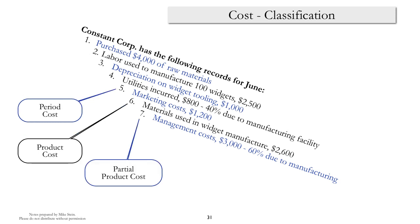Marketing costs, almost by definition, are not manufacturing costs, so they're period costs. Direct materials — here the materials are actually used in the manufacturing process, so that makes them a product cost. And the cost of management is a cost that can be divided between that related to manufacturing and that related to other activities of the firm.